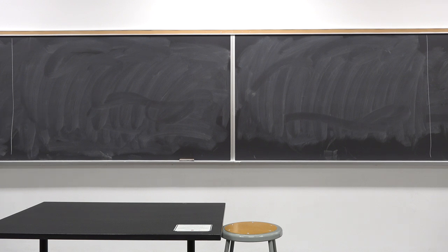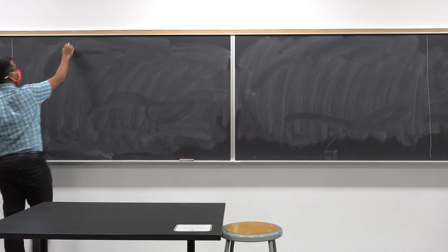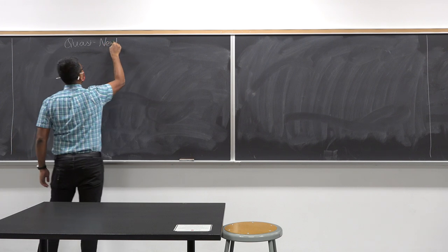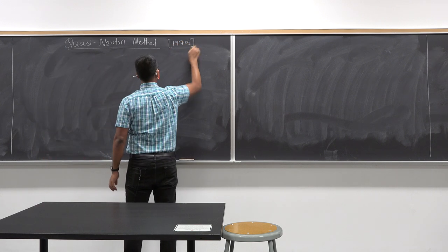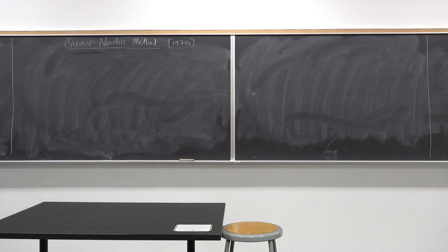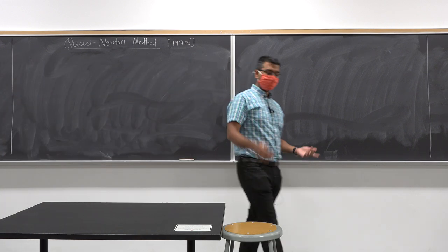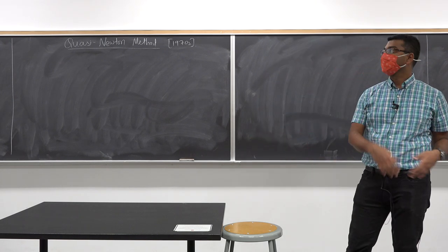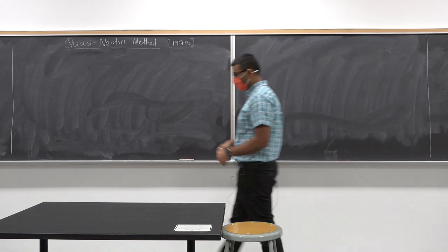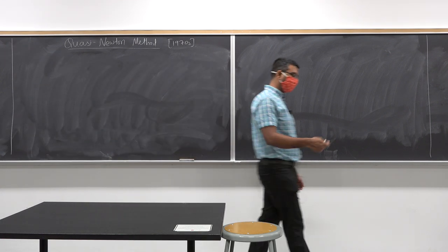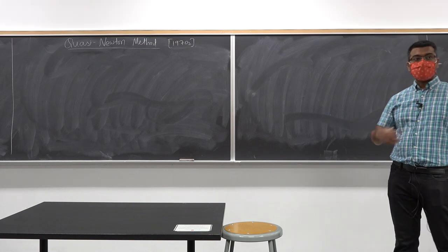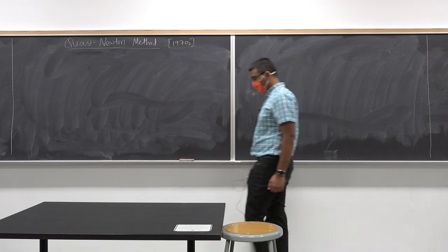The goal for today's lecture is to talk about quasi-Newton methods, going back to the 1970s. We have learned in previous lectures that gradient descent is a cool algorithm—it converges to a stationary point, and you can check second-order conditions to prove optimality. We also learned that Newton's method is much faster than regular gradient descent.